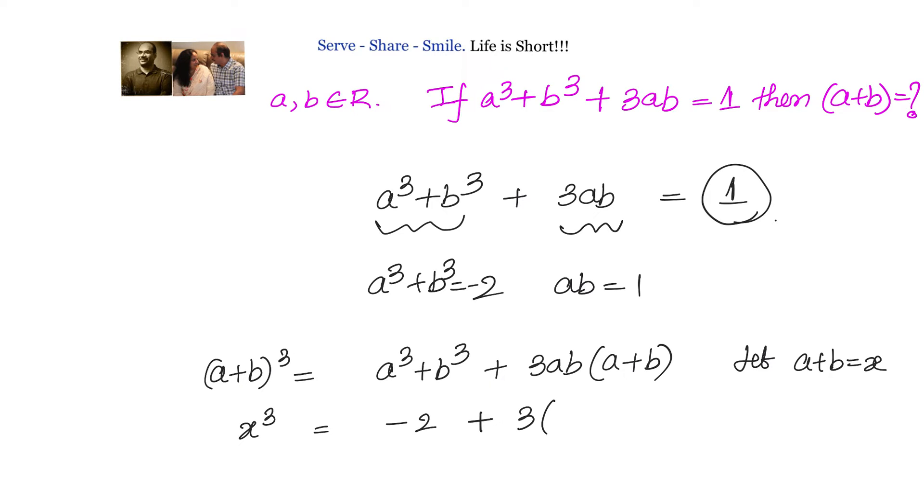Taking everything to one side, we have x³ - 3x + 2 = 0. This is satisfied by the value x = 1. When I put x = 1, I have 1 - 3 + 2 = 0.